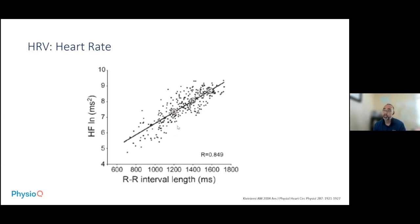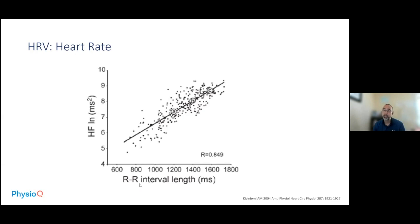Yes, that shows some things. But as you see here, there is much more variability on the vertical graph — a lot more range than the high frequency. High frequency tends to be much more sensitive and has a more specific focus on parasympathetics, whereas heart rate itself is a balance between parasympathetic and sympathetic. Faster heart rate means lower heart rate variability.